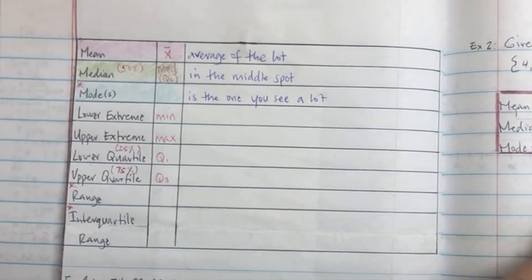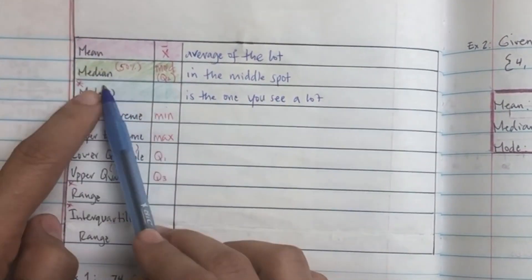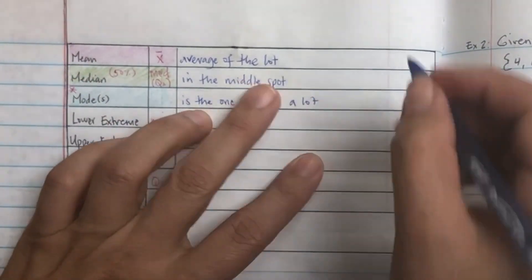Central tendency, central tendency. The mean is the average of the lot. The median is the one in the middle spot. The mode is the one you see a lot.